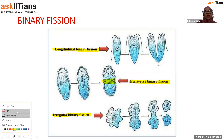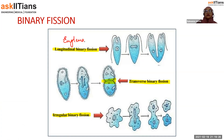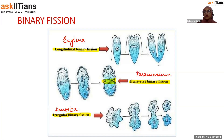Can you identify the animals? The first is euglena, the second is paramecium, and the third is amoeba. One cell is dividing into two cells, but the plane of division is different. Remember: euglena undergoes longitudinal binary fission, paramecium undergoes transverse binary fission, and amoeba undergoes irregular binary fission.